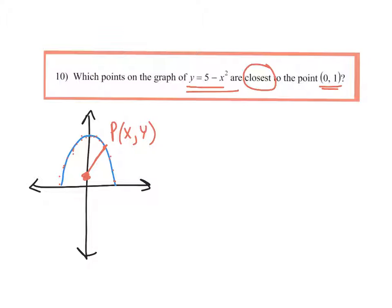What we want to do is write a function for this distance. We know the distance formula. The distance from this point (0, 1) to P can be written like this: it's the square root of x minus 0 squared, which is x squared, plus (y - 1) squared.